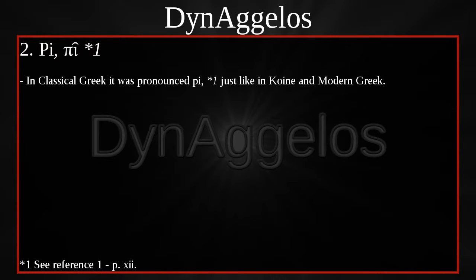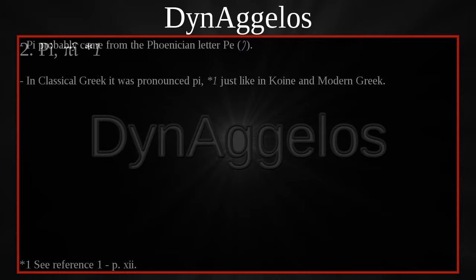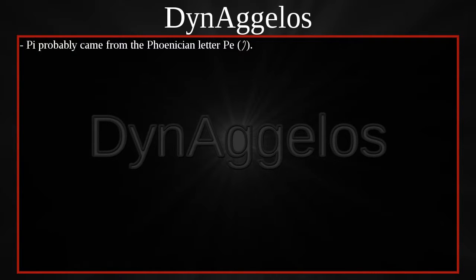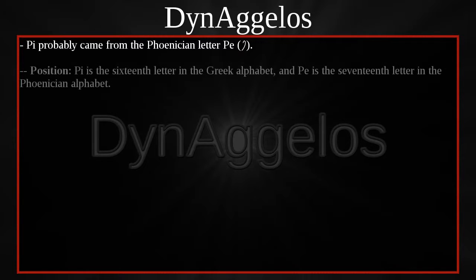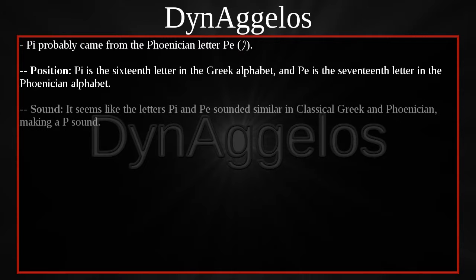PI — in classical Greek it was pronounced P, just like in Koine and modern Greek. PI probably came from the Phoenician letter PE. PE is the 16th letter in the Greek alphabet, and PE is the 17th letter in the Phoenician alphabet. It seems like the letters PI and PE sounded similar in classical Greek and Phoenician, making a PE sound.